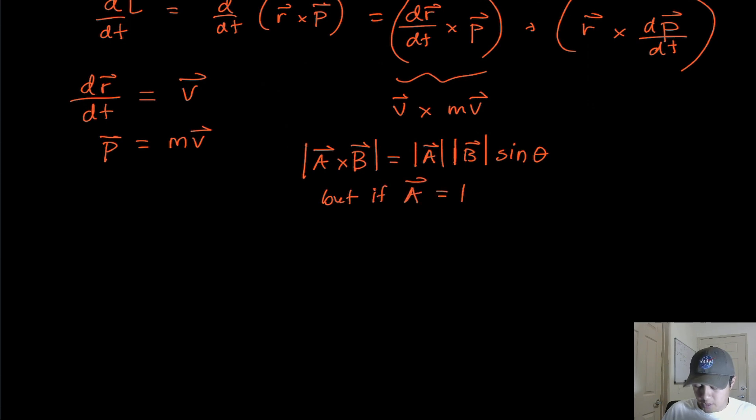But if A equals B, like in our case above, the angle between them is zero degrees. In essence, the two vectors are right on top of each other like that. And so if the angle is zero degrees, the sine becomes zero in that case.